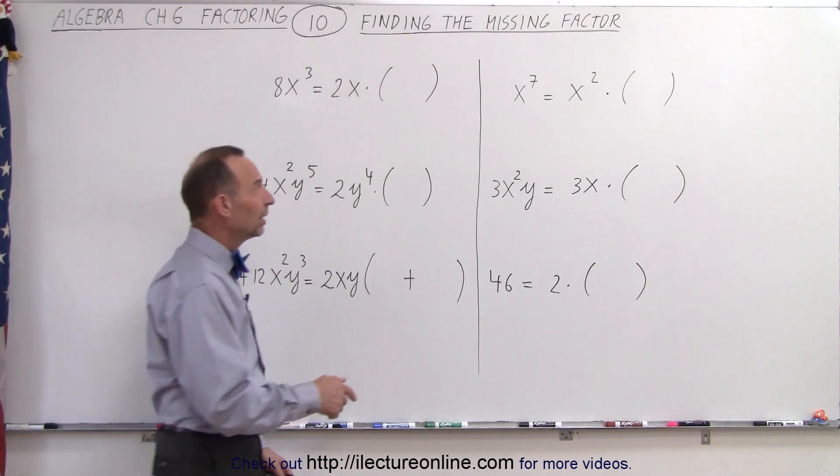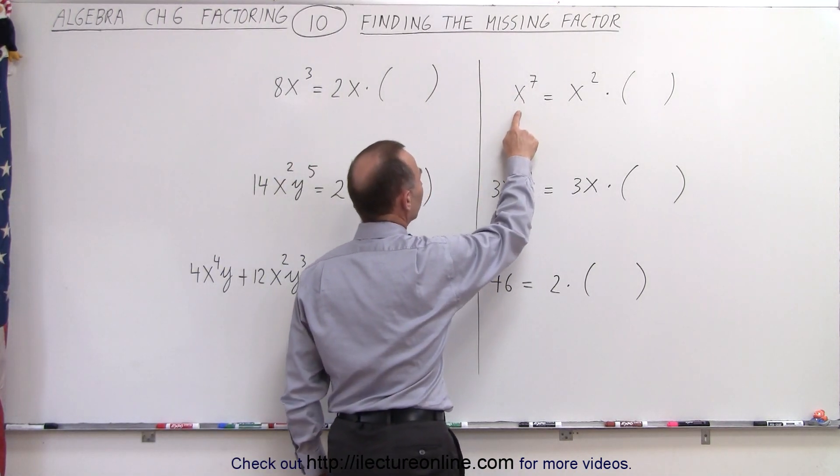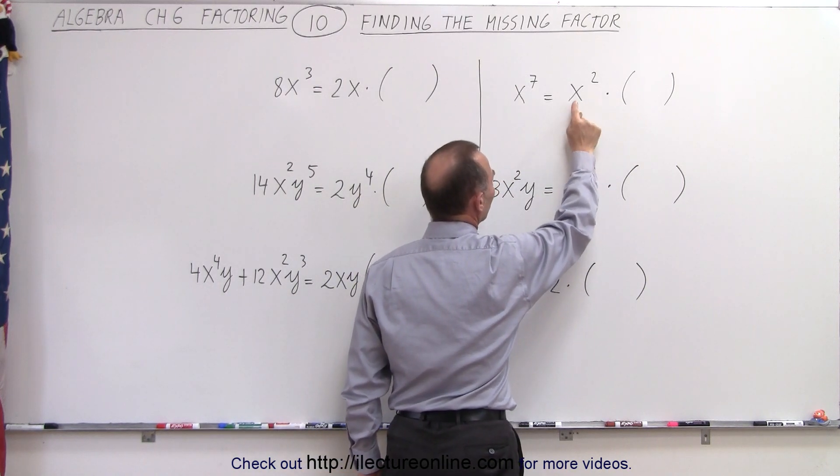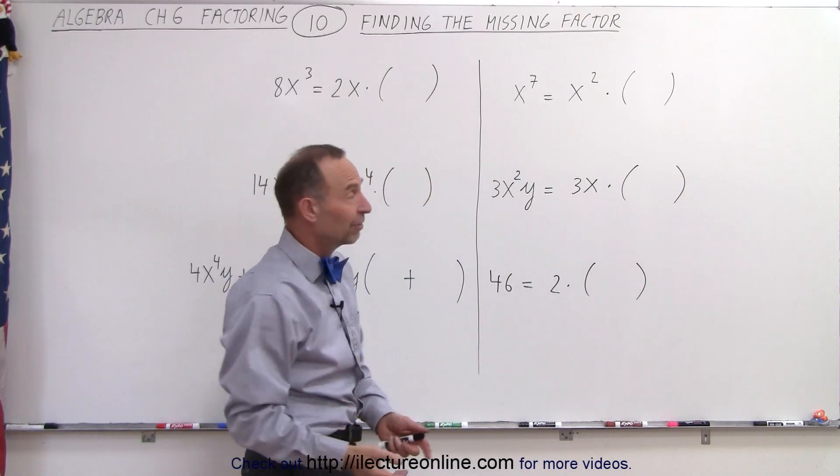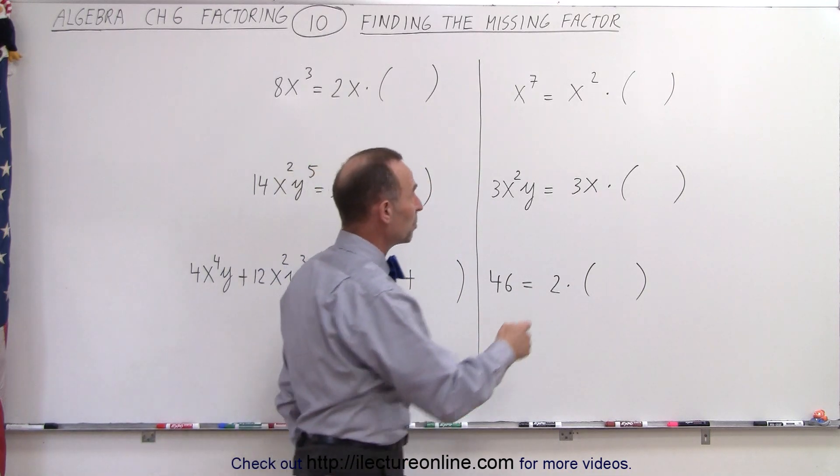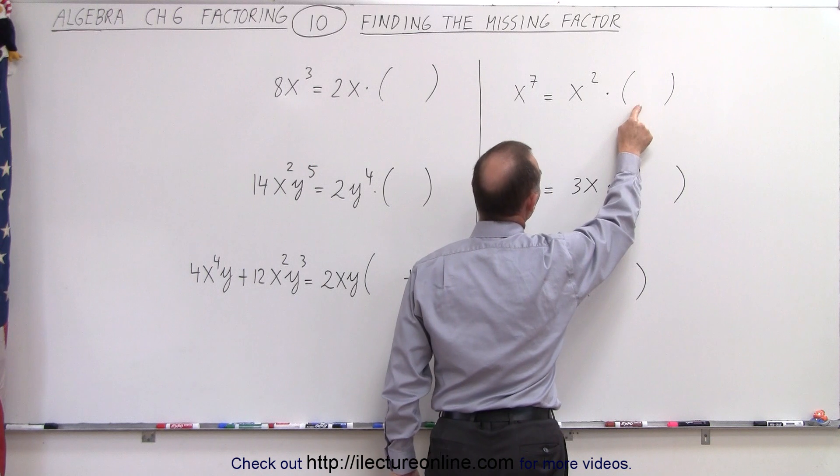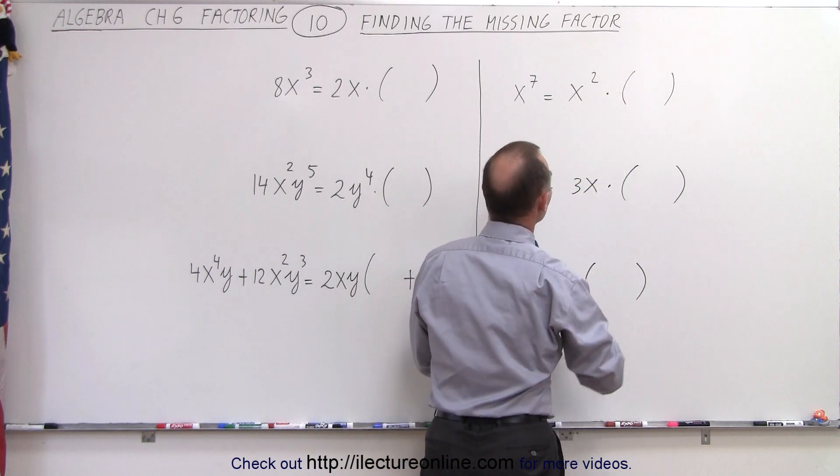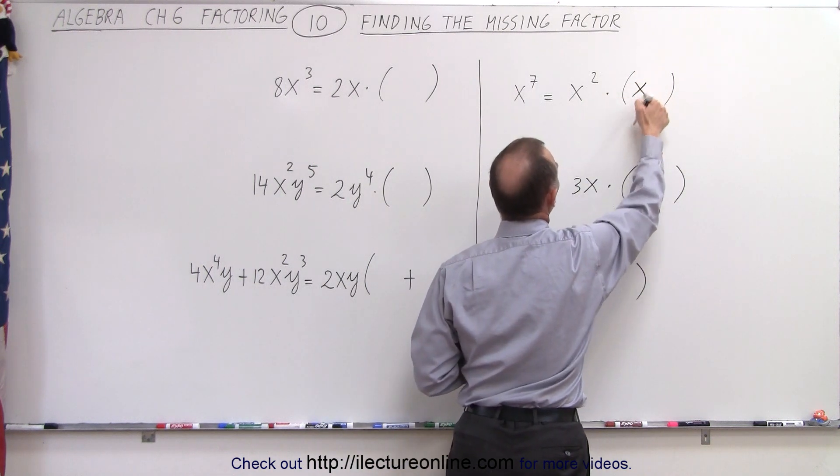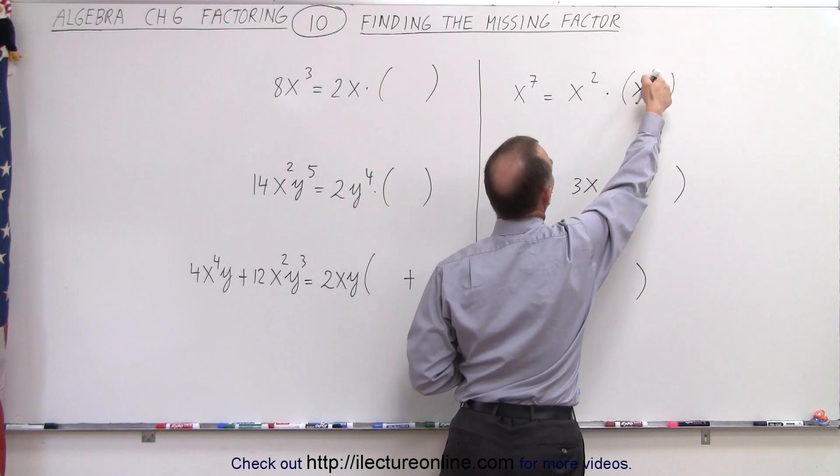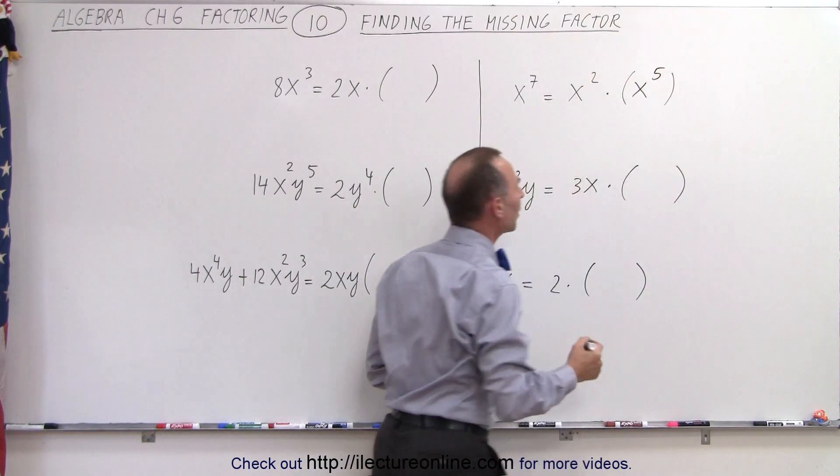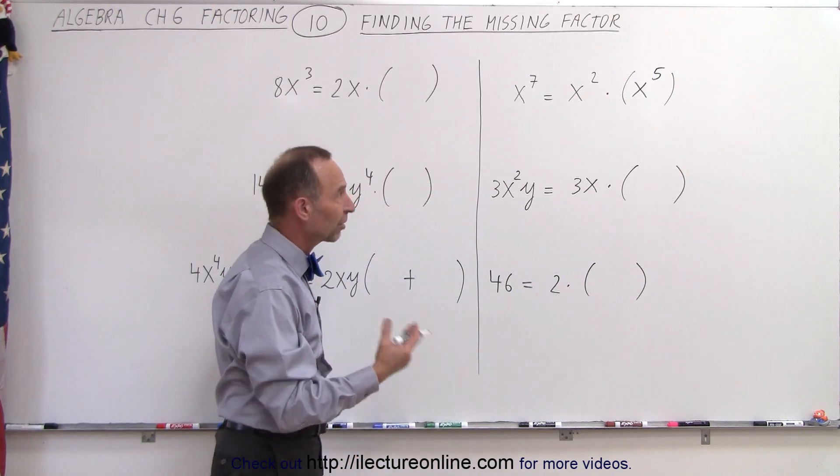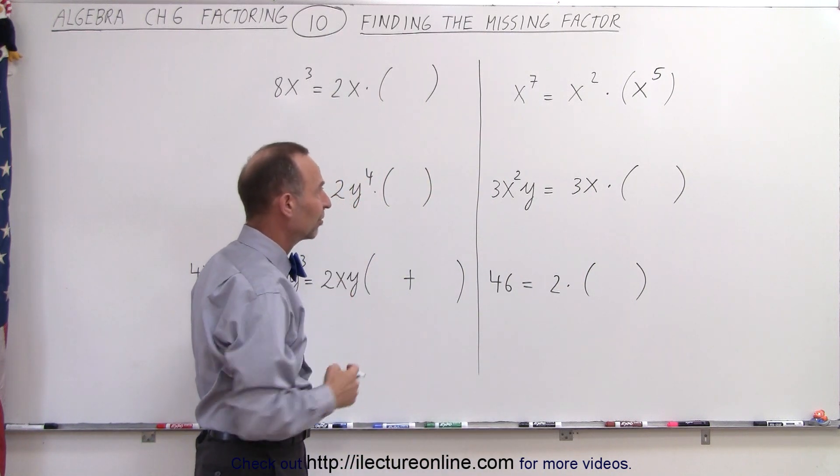For example, if we take x^7 and write it as the product of two factors, given one factor, what will be the other factor? We call that the missing factor. Notice when we multiply and the bases are the same, the exponents add together. So 2 plus the missing exponent should give me 7. Therefore, I need x^5. x^2 times x^5 gives me x^7.